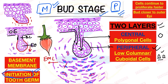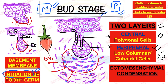The ectomesenchymal cells also divide, and as they divide new cells form and their number grows. Neural crest cells also migrate here. So all these cells condense near the enamel organ, and this is called ectomesenchymal condensation — a very very important viva question. Ectomesenchymal condensation is the condensation of ectomesenchymal cells near the enamel organ in the bud stage of tooth development, and it happens because of mitosis — division of ectomesenchymal cells and migration of neural crest cells into this area.